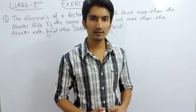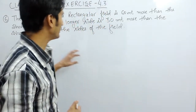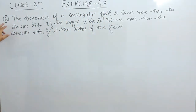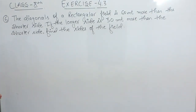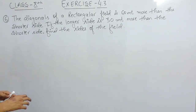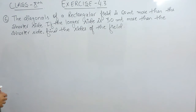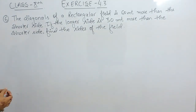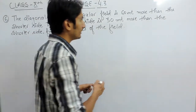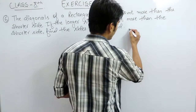Hello everyone. In this video we are going to solve question number 6 of exercise 4.3. The question says: the diagonals of a rectangular field is 60 meters more than the shorter side. If the longer side is 30 meters more than the shorter side, you have to find the sides of the field.